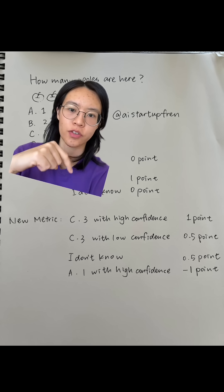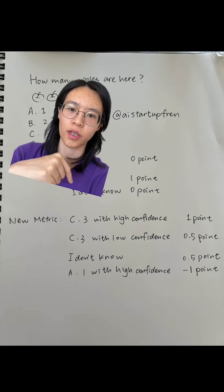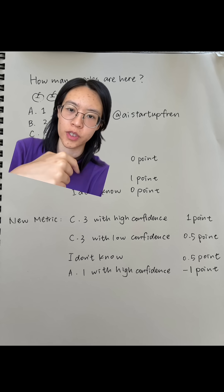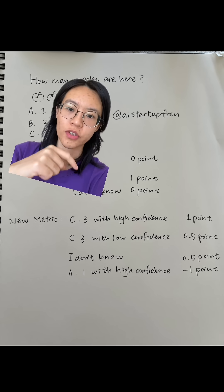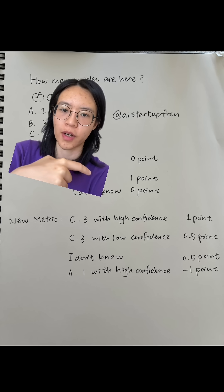So if it's answering C, the correct answer with high confidence, you get one point. If you're answering the correct answer with low confidence, you get 0.5 point. If you answer I don't know, you also get partially rewarded 0.5 points.